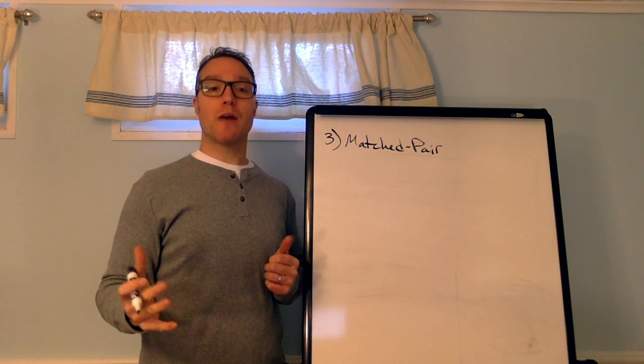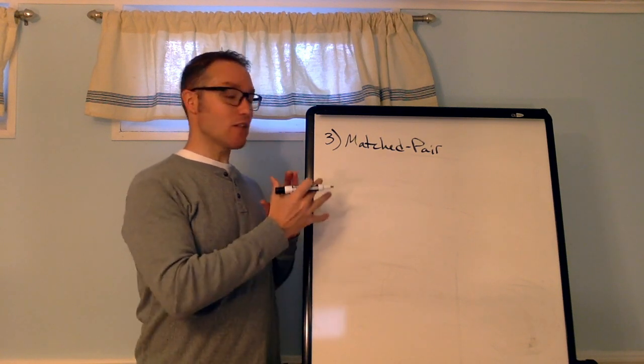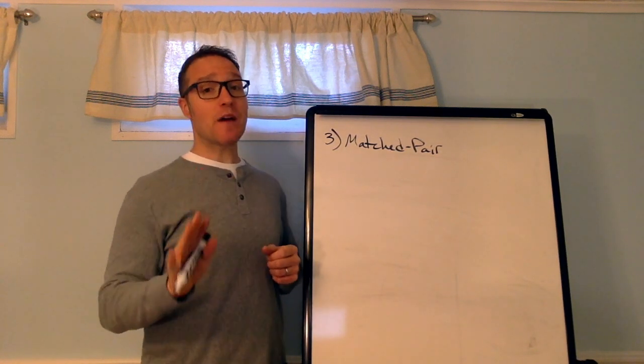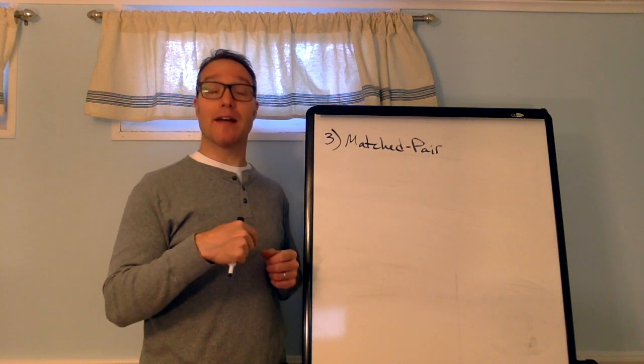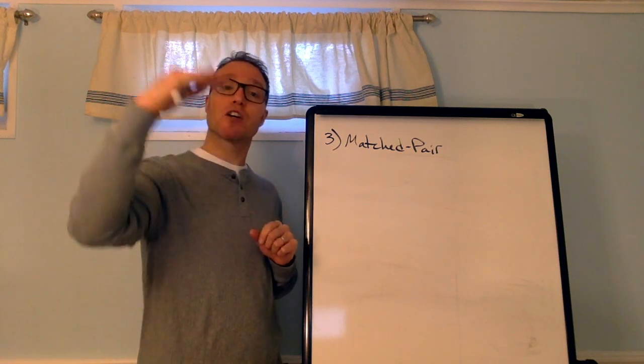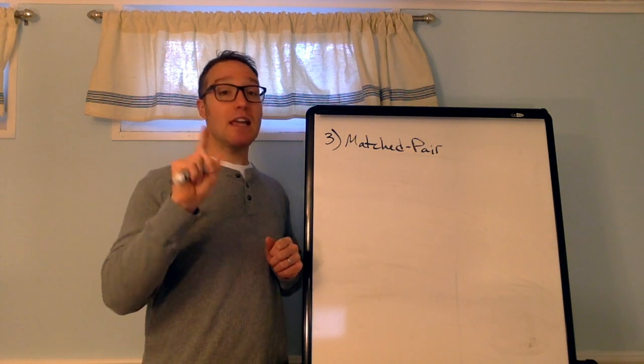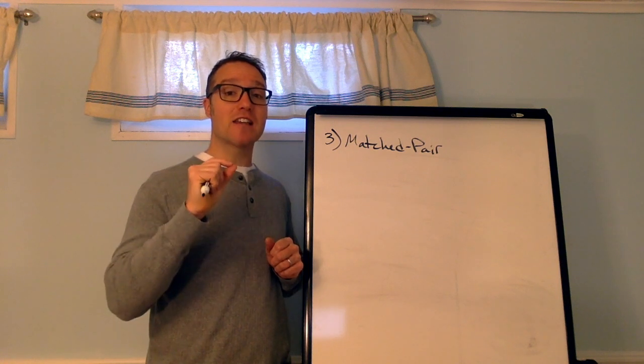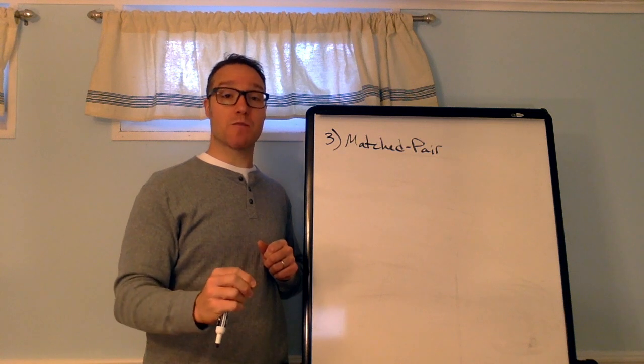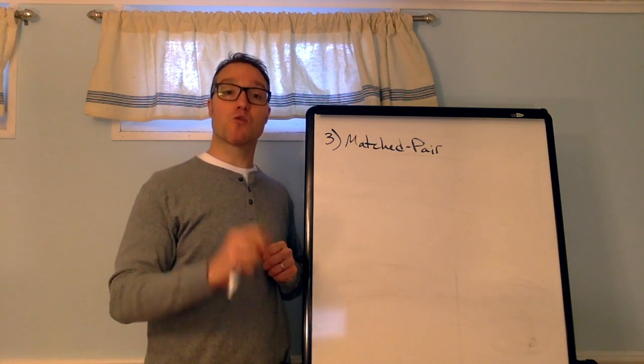Okay, the third common example that I want you to know about is matched pairs design. And this one is not usually drawn out. So, I'm just going to explain it. This is a special case of a block design. Where the block only contains two individuals. Each block. And you're going to have many, many blocks. Alright? So, it's a special case of block design. In which either a participant acts as their own treatment and control. Or else, very similar participants. Like identical twins or people that are matched on many, many measurements. Are directly compared.